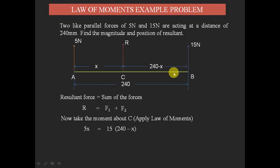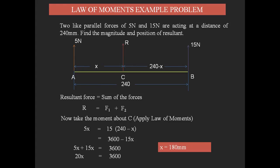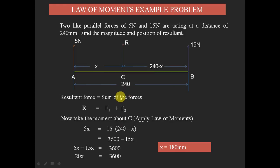Expanding: 5x = 3600 − 15x. Bringing 15x to the left side: 5x + 15x = 3600, so 20x = 3600, giving x = 180 mm. This value x is the distance between A and C — the position of the resultant with respect to point A. Similarly, the position from B is 240 − 180 = 60 mm.